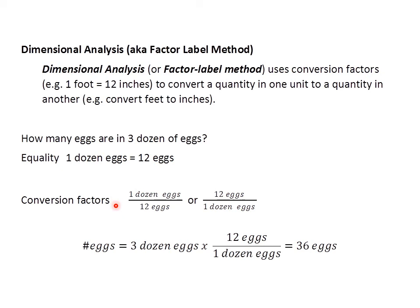So from this equality, I can get two conversion factors. I can say 1 dozen of eggs divided by 12 eggs, or 12 eggs divided by 1 dozen of eggs. In each of these, the ratio is always equal to 1. So if I divide 12 eggs on both sides, I get 1 dozen of eggs divided by 12 eggs is equal to 1.